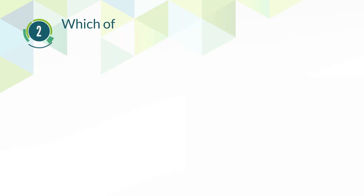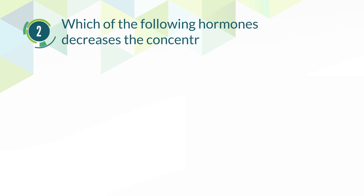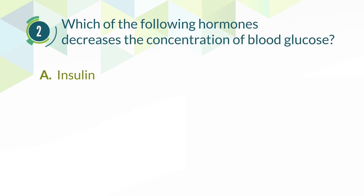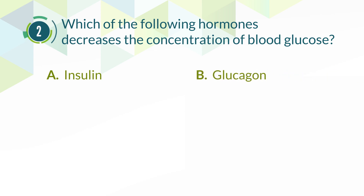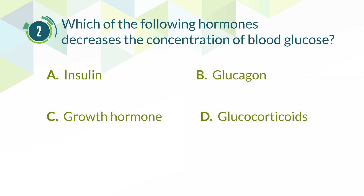Number 2. Which of the following hormones decreases the concentration of blood glucose? A. Insulin. B. Glucagon. C. Growth hormone. D. Glucocorticoids.